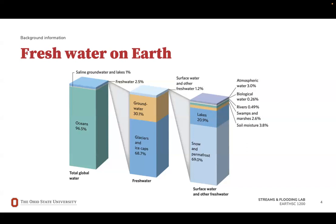The scarcity of fresh water is aggravated by climate change, which shifts precipitation patterns and human activities that result in inefficient water use and contamination. As populations grow and living standards improve, the demand for fresh water rises, further straining limited resources. The consequences of fresh water scarcity are profound, affecting ecosystems, human health, food security, and potentially leading to conflict and migration as communities seek reliable water sources. Because of this, it's important that we understand how to preserve our surface water for ourselves and for the ecosystems that rely on them.